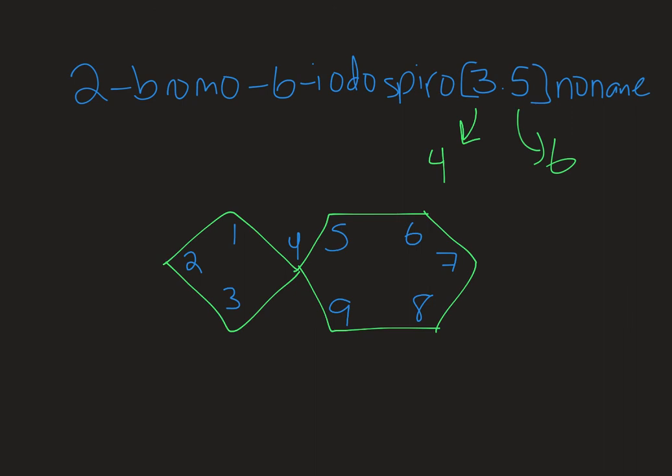So now all I have to do is put my substituents in. So the bromine was at the two position. I've labeled this position two. So bromine would go there. And my iodine is at the sixth position. Let me get this out of the way here so we can put our iodine in. So I would put my iodine right here. So this is 2-bromo-6-iodo-spiro-3-5-nonane. So you can go from a structure to a name or from a name to a structure.